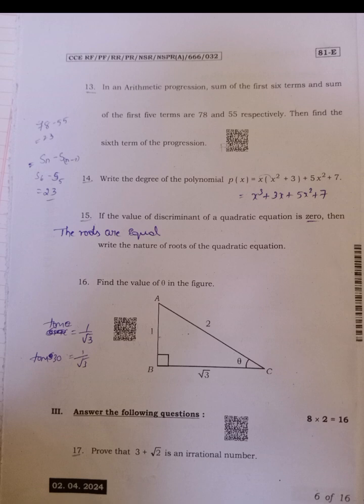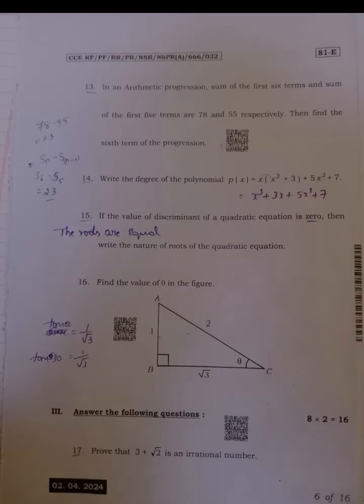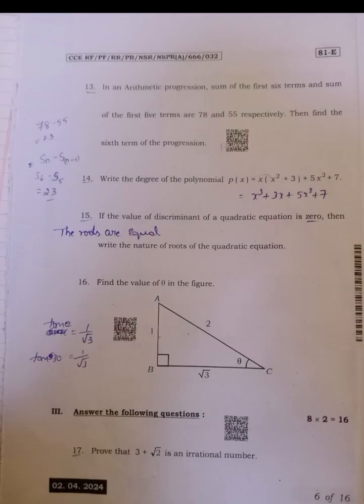Sixteenth, find the value of theta in the following figure. Theta means sine or tangent also we can apply, that is 1 by root 3, then tan 30 equals 1 by root 3. So theta will equal to 30.